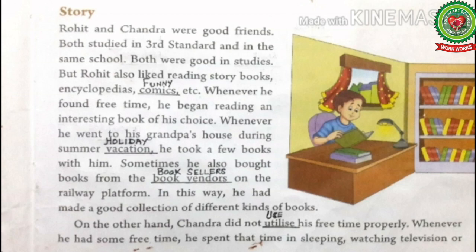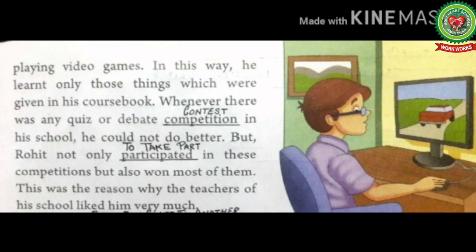On the other hand, Chandra did not utilize his free time properly. Underline the word 'utilize' and write down its meaning: use. Whenever he had some free time, he spent it sleeping, watching television, or playing video games. In this way, he learnt only those things which were given in his course book. Chandra only read his textbooks and wasted his free time — he did not make good use of time.